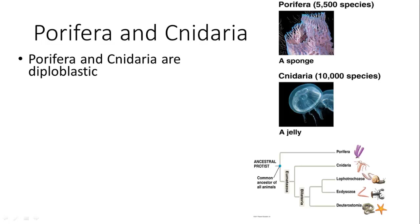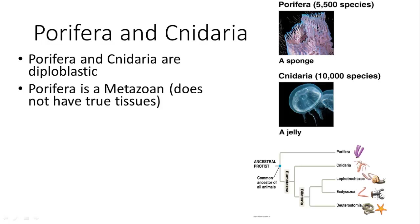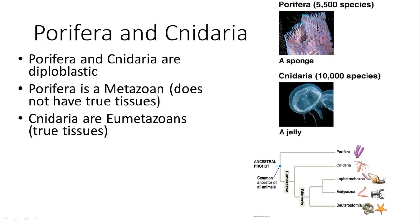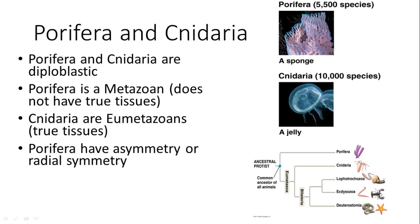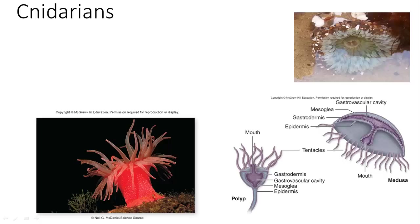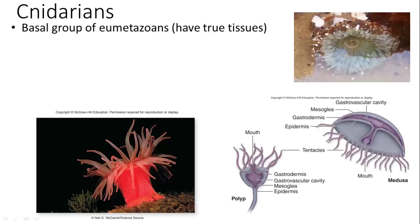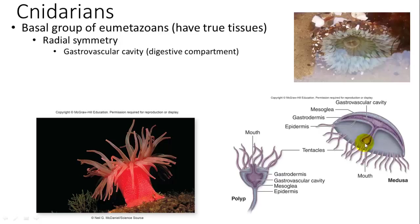Cnidaria are eumetazoans — they do have true tissues — whereas Porifera are metazoans without true tissues. Porifera are asymmetrical or sometimes radially symmetric; cnidarians all have radial symmetry. Cnidarians are the basal group of eumetazoans and have a gastrovascular cavity — a mouth leading to a cavity that acts as both circulatory and digestive system.